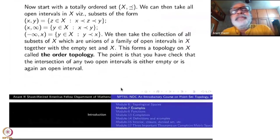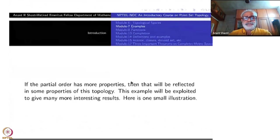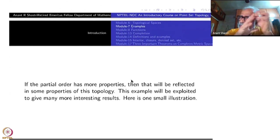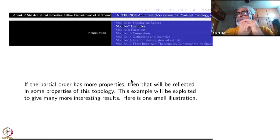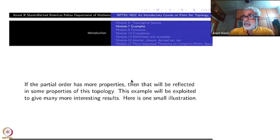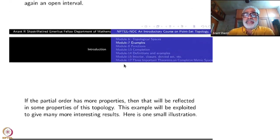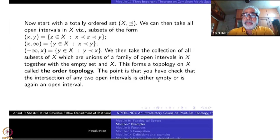Take a minute and verify this yourself. For the order topology, you have to check that the intersection of two open intervals, if non-empty, is again an open interval — that is stronger than just being a union. Then only the third property (finite intersections) is verified. Once more: if you assume additional properties for the totally ordered set, that will be reflected in the topology, and vice versa — so you may get more interesting things.